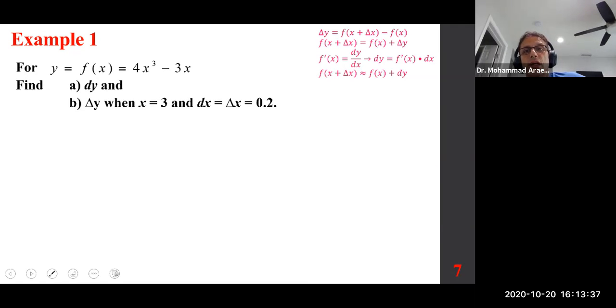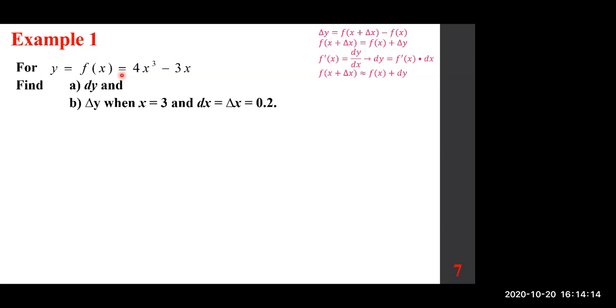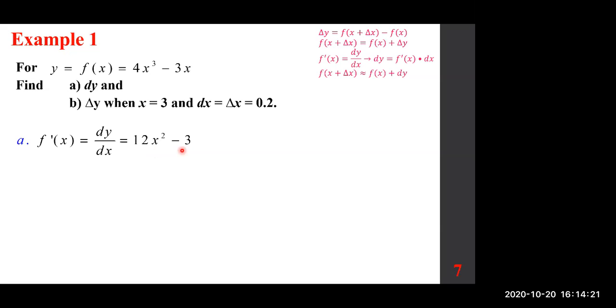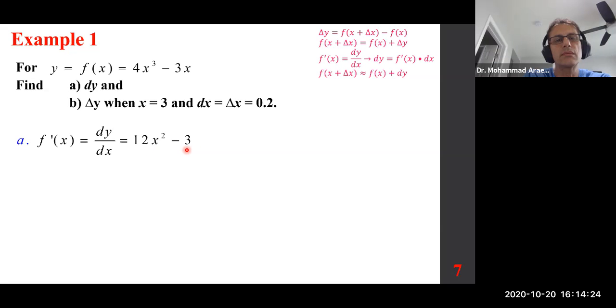Here's a simple example to get us started. As you can see in the top right, we have the formulas we just discussed. We want to find the dy and delta y, and then we want to plug it in. For now, dy. The moment you hear dy, you can ignore it for a second and say I'm going to differentiate this. What is f prime of x? 12x squared minus 3. Thank you. Dy dx is 12x squared minus 3. So far, not a big deal.